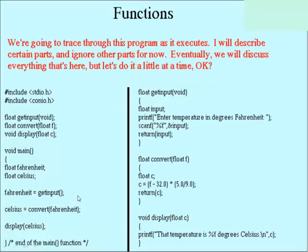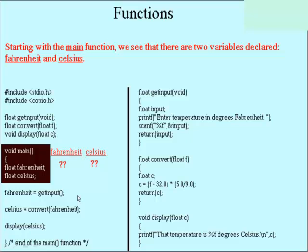So we'll trace through the program as it executes. I'll describe the parts, ignore other parts. Eventually, we'll discuss everything, but we'll just do it a little piece at a time. In here, we have a couple of variables that are declared inside of main, so they're only known inside of main. And these are called Fahrenheit and Celsius. Float means that they're floating point numbers. That means they can deal with a decimal point.